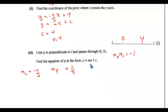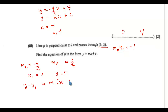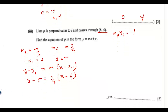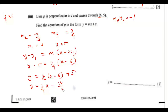Find the equation of P in the form y equals mx plus c. Since P passes through the point (6, 5) with gradient 3 over 4, using y minus y1 equals m times (x minus x1): y equals 3 over 4 times (x minus 6) plus 5. Expanding: y equals 3 over 4 x, minus 3 over 4 times 6, plus 5.